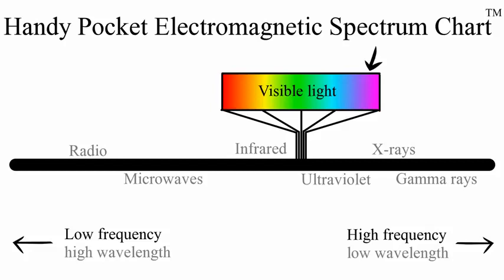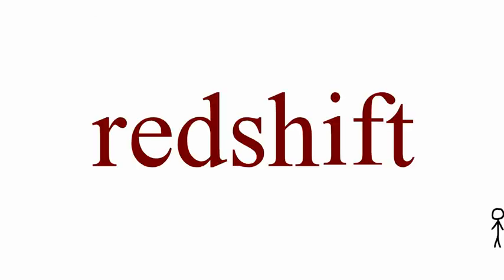Higher frequency light waves means bluer light, and lower frequency light waves means redder light. This is called redshift, and it may possibly be among the weirdest and coolest things of all time.